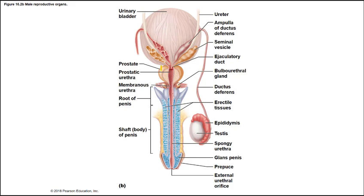Another view shows the different glands. You can see the ejaculatory duct, the seminal vesicles, and the prostate. This gives a clear idea of how the urethra passes through the prostate — you can envision how inflammation would impede urine flow. The bulbourethral glands, those pea-shaped glands, are also visible.